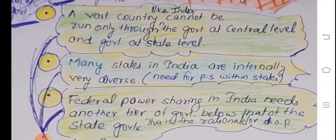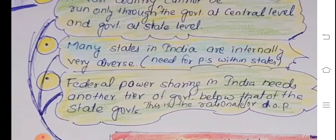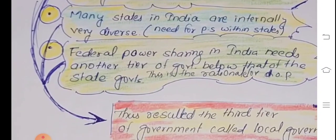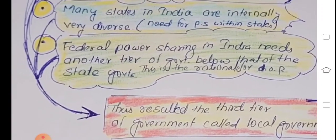So, a vast country cannot be run only through two tiers of government. Also, many states in India are internally very diverse. Thus, there is a need for power sharing within the states. So first, India is a vast country and there is a need for power sharing at one more level. The second reason is why there is a need for power sharing within the states. And the third reason is that federal power sharing in India needs one more tier of government at the local level, below the state government.